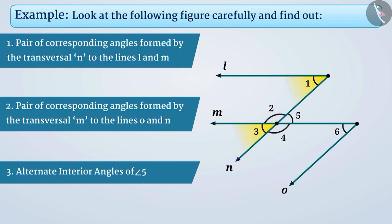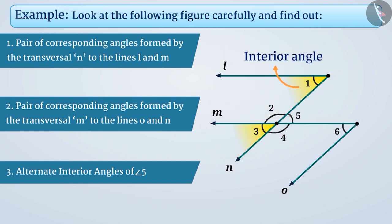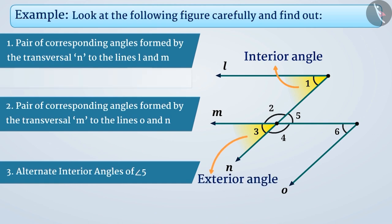Both angles 1 and 3 are formed on the same side of the transversal, and one of them is an interior angle and the other one is an exterior angle. So they form a pair of corresponding angles. Apart from these, there is no other pair of corresponding angles here.